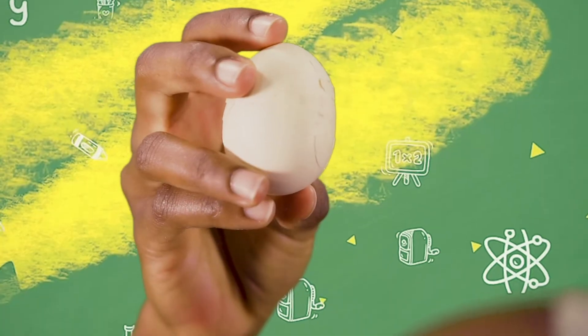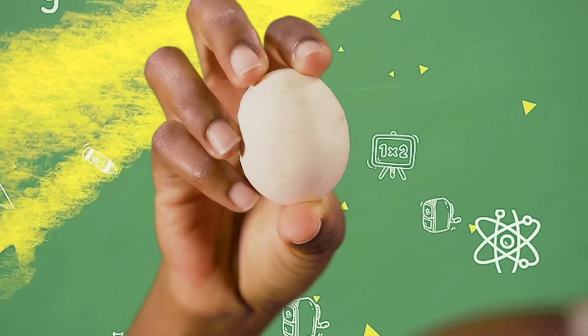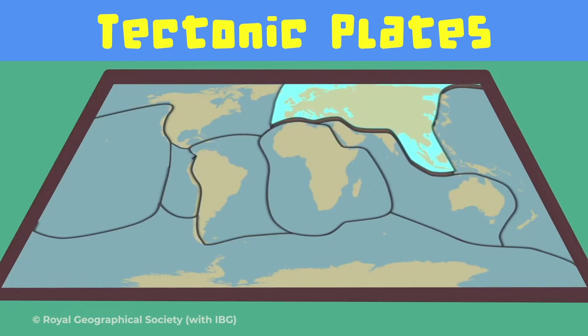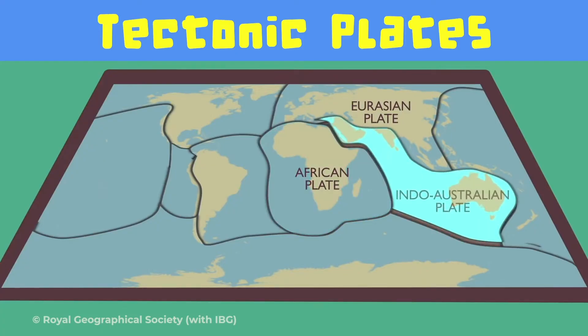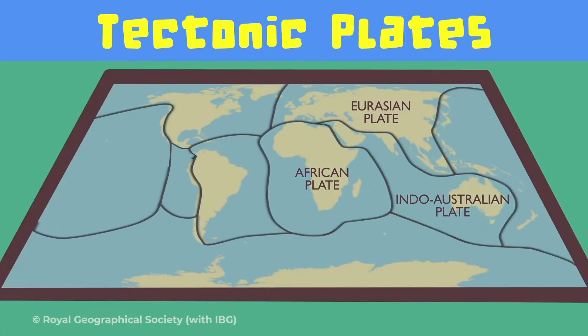Let's talk about the crust, though. Unlike the bread's crust, the Earth's crust is not one piece. Look — if I smash my egg, it breaks into pieces. The Earth's crust is like that too. It's broken into big pieces called plates that house the continents.